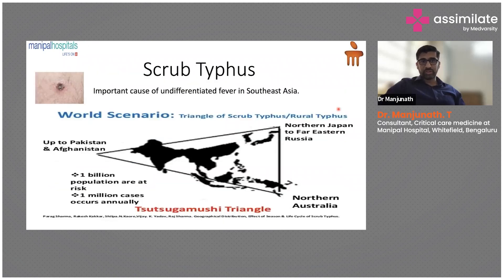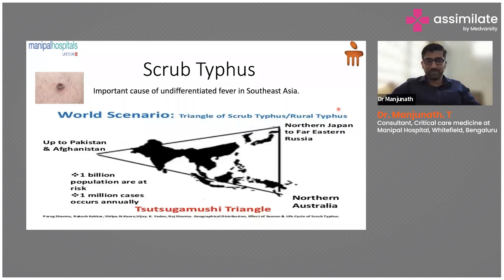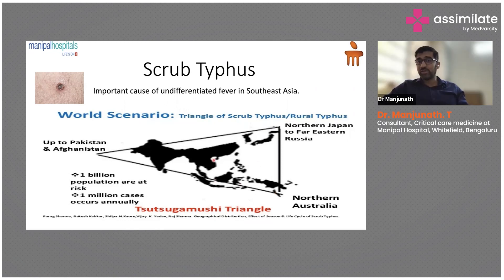Moving on to scrub typhus — it is an important cause of undifferentiated fever in Southeast Asia. It is associated with something called the Tsutsugamushi triangle, spanning from Pakistan and Afghanistan up to northern Japan and eastern Russia down to Australia. For those of us working in multi-specialty tertiary care centers, we do get patients who have traveled to these countries — so taking a thorough travel history is most important.